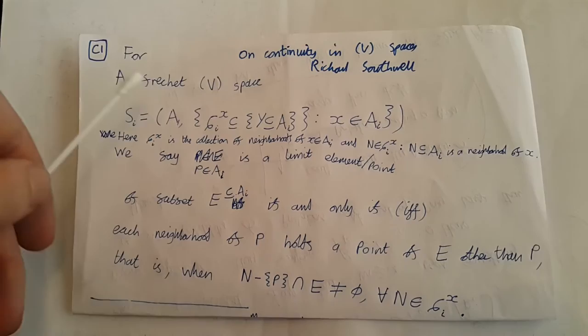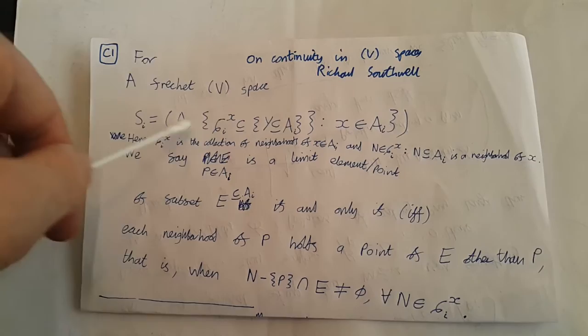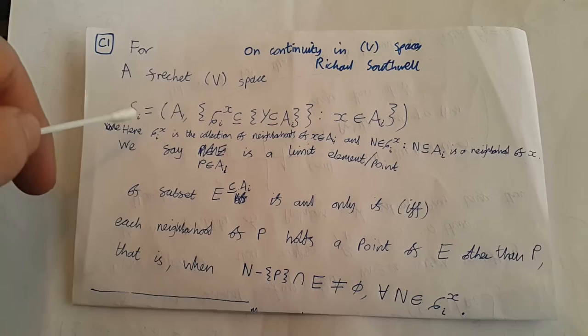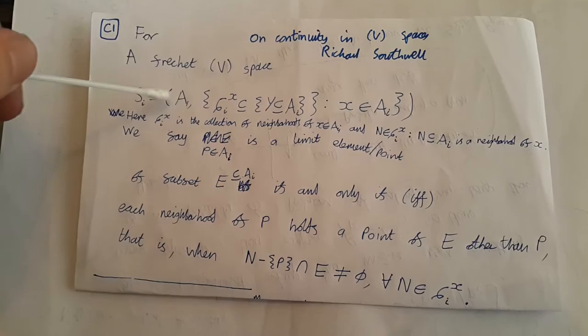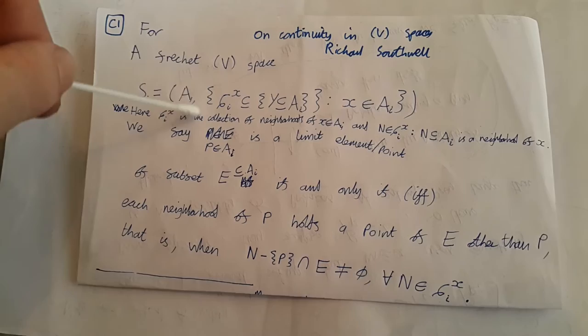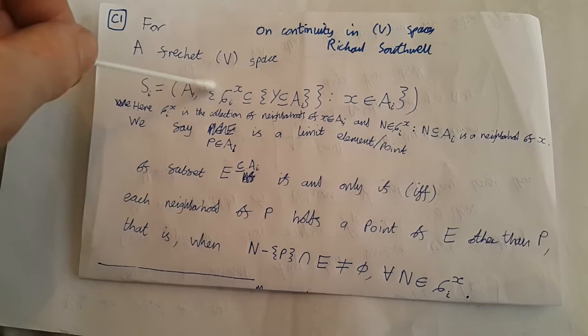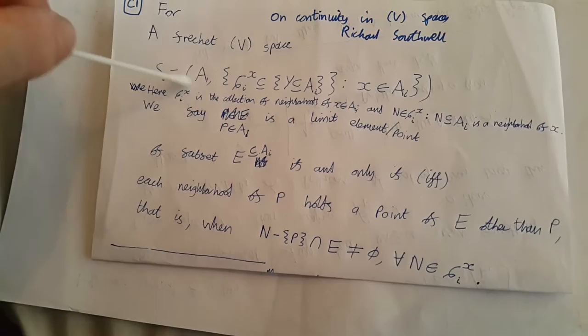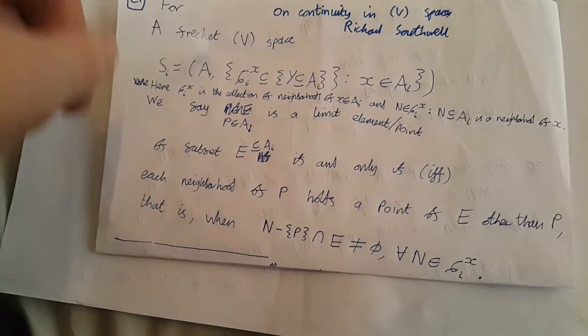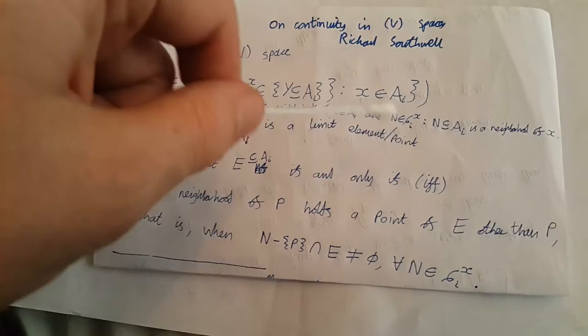Today we're going to talk about continuity in Fréchet V-spaces. Fréchet V-spaces, as I've recently discovered, are a fantastic way of abstractly representing spaces. In some sense they're more general than topological spaces, but also in some sense more intuitive. The idea of a Fréchet V-space is that we have some set of elements — think of these as the points in our space — and each element is associated with a collection of neighbourhoods, which we denote as zeta of xi, being the collection of neighbourhoods associated with point x. The index i just denotes the space, because we could have different Fréchet V-spaces on the same set i which have different neighbourhood structures.